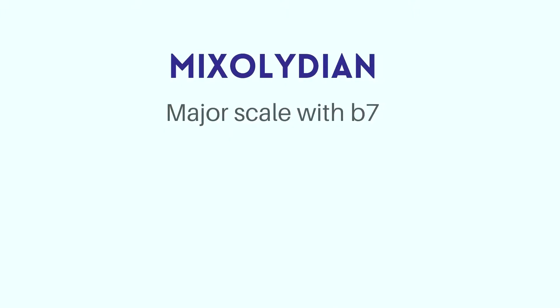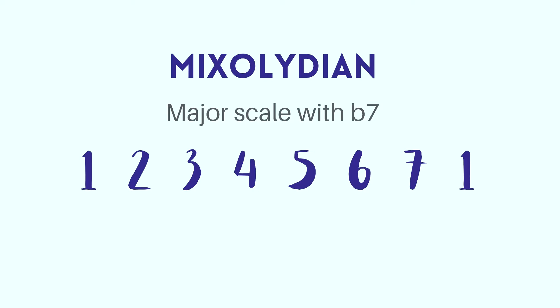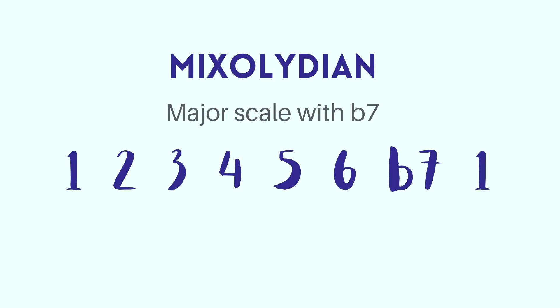If you understand the major scale and the minor scale, the other modes are just a reach away. For example, the Mixolydian mode — which is the mode I'm focusing on in this video — is simply the major scale with a flat seven. The major scale is 1-2-3-4-5-6-7-1, where that seven is a natural seven. In Mixolydian, you flatten it down a semitone, so instead of seven you sing flat seven. The Mixolydian mode is 1-2-3-4-5-6-flat7-1.